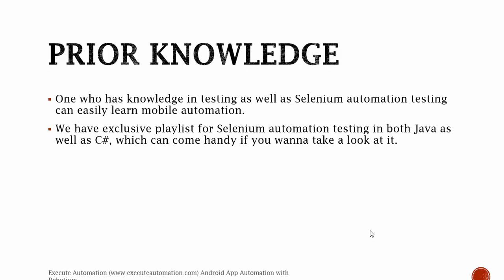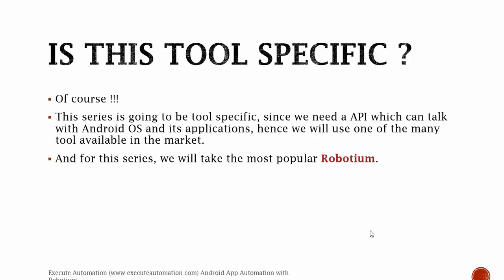We already have an exclusive playlist for Selenium automation testing in both Java and C#, so that playlist can come in handy if you want to understand how Selenium automation is done. If you don't have knowledge of Selenium, that playlist will cover it, and then you can jump into this mobile automation testing series. Since we need an API that can talk with the Android operating system and its applications, we will use one of the many tools available in the market — and for this series, we'll take the most popular one: Robotium.